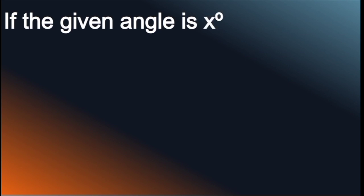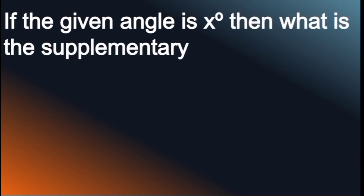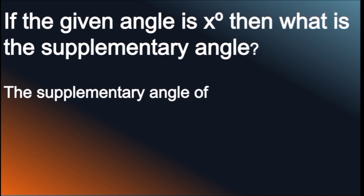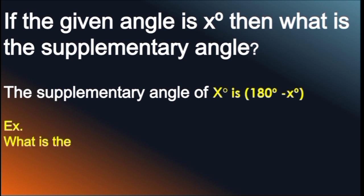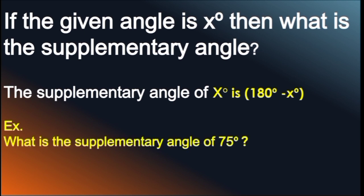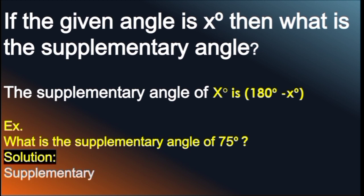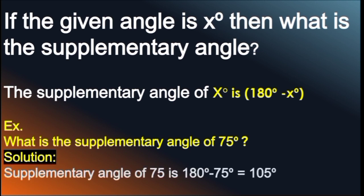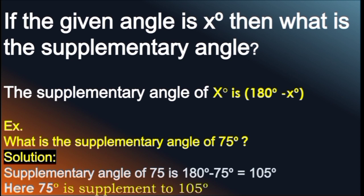When the sum of 2 angles is 180 degrees, they are called Supplementary Angles. If the given angle is X degrees, the supplementary angle is 180 degrees minus X degrees. For example, what is the supplementary angle of 75 degrees? The supplementary angle of 75 degrees is 180 minus 75, which equals 105 degrees. Here, 75 degrees is supplementary to 105 degrees, and vice versa.